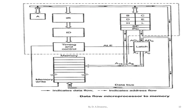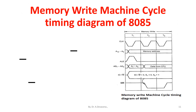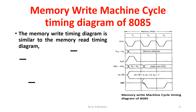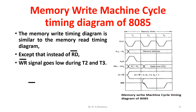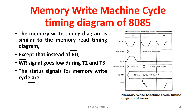Data flow from the microprocessor to memory is represented here. The memory write timing diagram is similar to the memory read timing diagram, except that instead of Read bar, the Write bar signal goes low during T2 and T3 states. The status signals for a memory write cycle are: IO/Memory bar = 0, S1 = 0, S0 = 1.